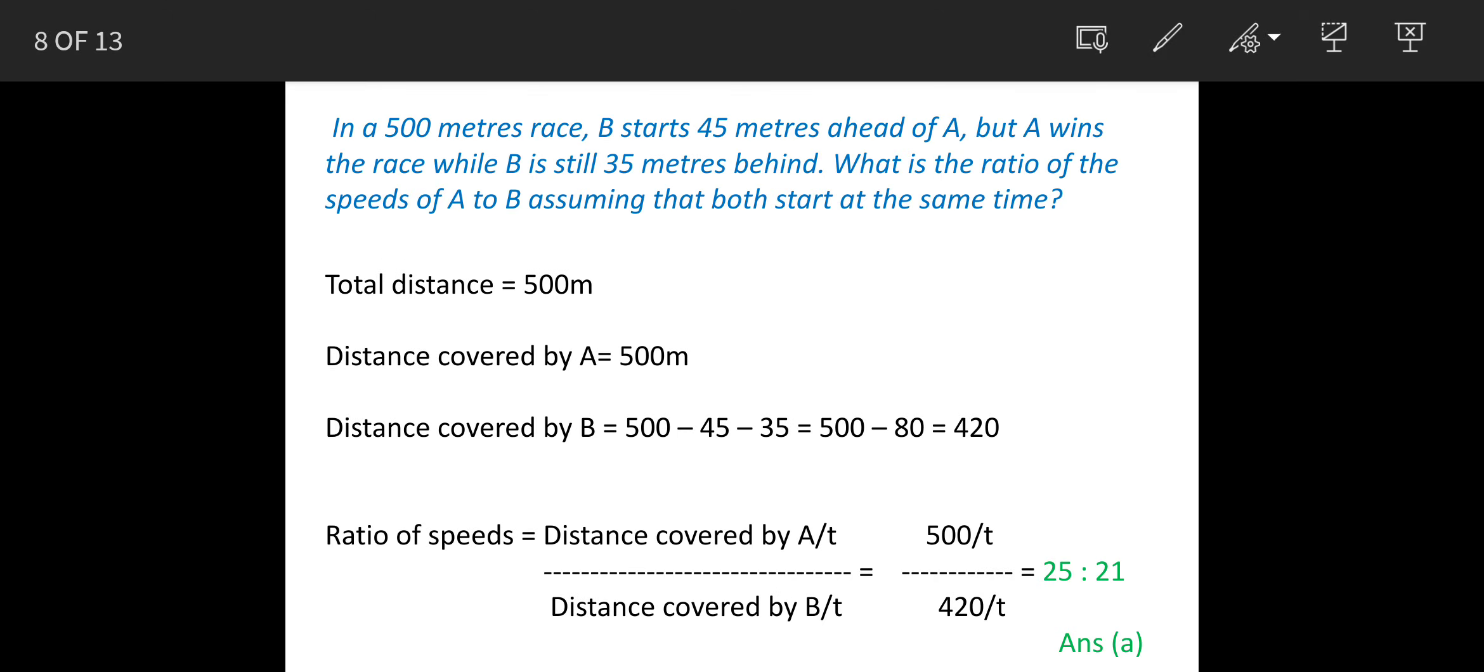So we'll find out the total distance is 500. Now when you want to work out speed, it is basically a function of distance upon time. The total distance is 500, and A has completed the entire 500 because he started from the start point and reached the finish point.